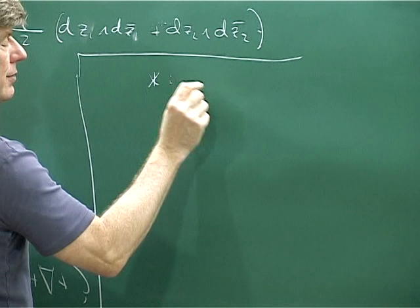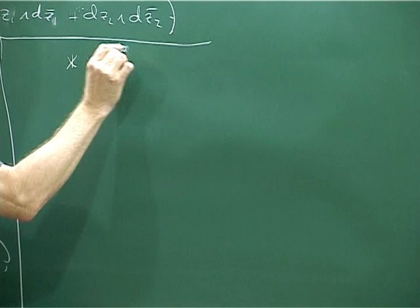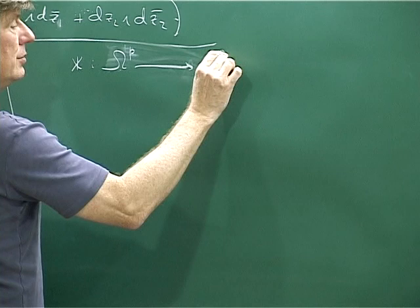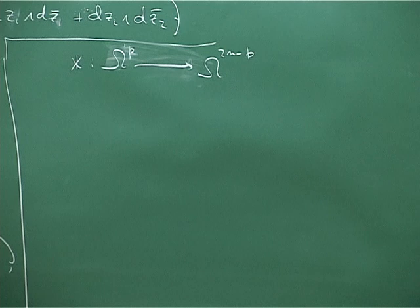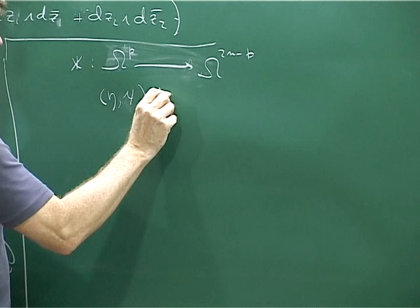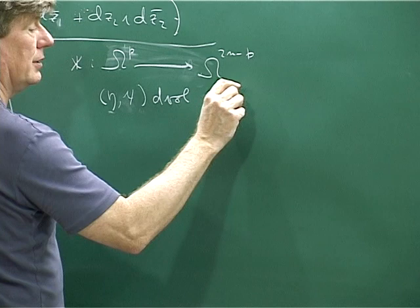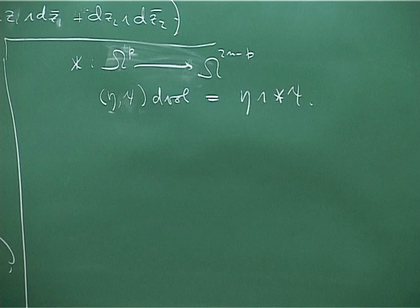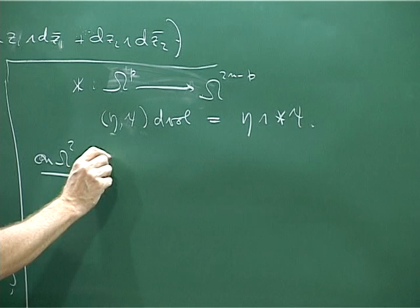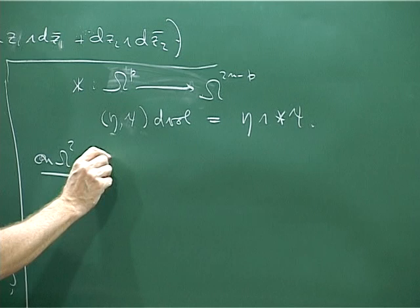You have this two-form, and if you look at what two-forms do, you have the Hodge star operator, which takes p-forms to (2n−p)-forms, defined by the relation that ⟨η,ψ⟩ times the volume form equals η ∧ ⋆ψ. On what is essentially a 4-manifold, Ω² maps to Ω². On Ω², star-squared equals the identity, so you find plus-or-minus-one eigenspaces.